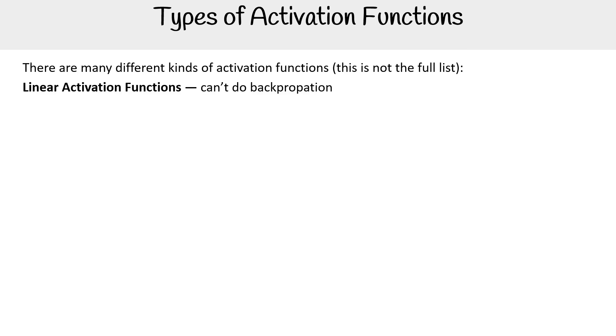We have linear activation functions—they can't do backpropagation, so they just pass along the data. We have nonlinear activation functions, so they can do backpropagation and can stack and have many layers.